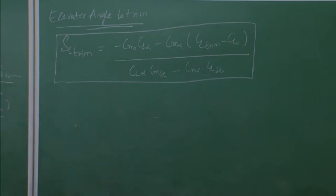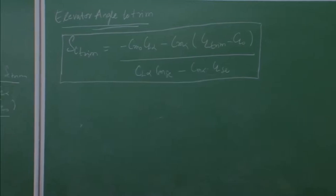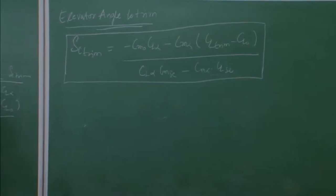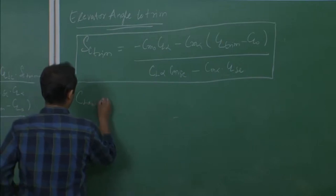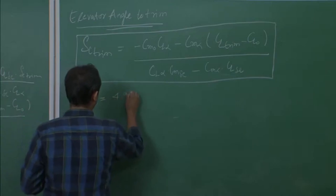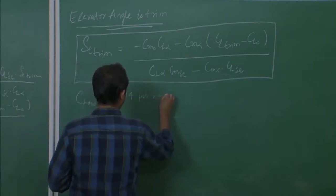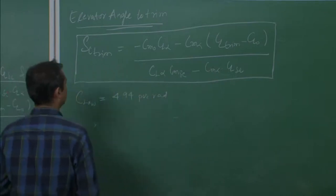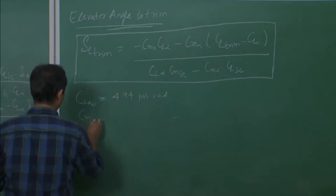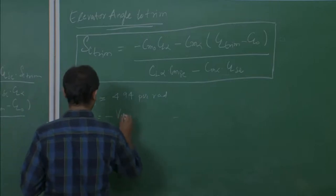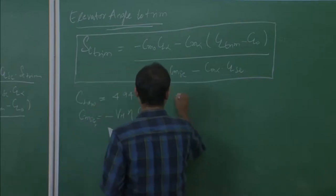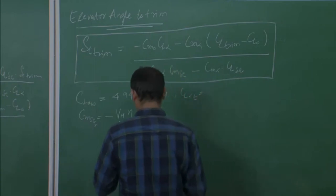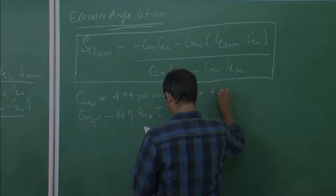Now after derivation, we revisit the numerical example from yesterday. Values from the previous lecture: CL_α for the wing = 4.94 per radian. The formula derived today is CM_δE = −VH × η × CL_αT × τ, where CL_αT was calculated as 4.21 per radian.